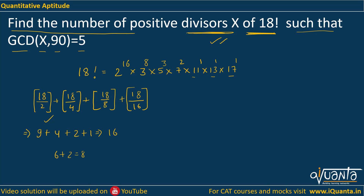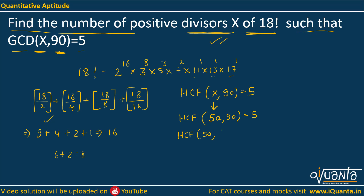Now we need to find those divisors of 18 factorial whose HCF with 90 equals 5. So x must be of the form 5a, and 90 can be written as 5 × 18 = 5 × 2 × 3². When we take HCF of 5a and 5 × 2 × 3², we need it to equal 5 only.